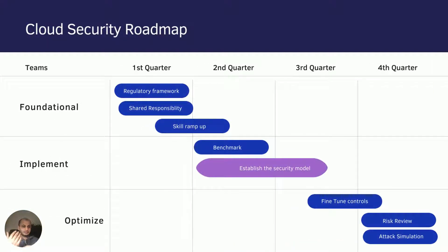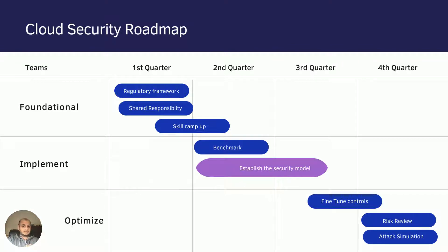If you've listened to my previous video on how to create a cloud security roadmap, this is a complementary session that builds on top of that. If you haven't watched that, please go and watch it. In my last video, I went through the importance of having a cloud security roadmap for your organization — implementing security in a phased manner, whether you're using infrastructure as a service or platform as a service.